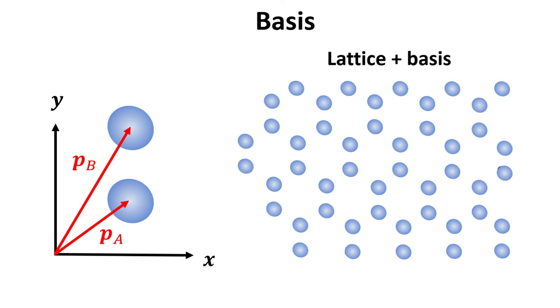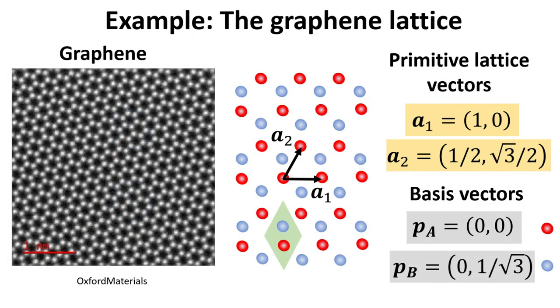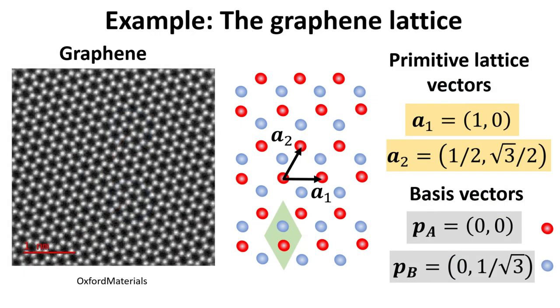The example given here is that of an actual two-dimensional material that exists in nature. Graphene is a two-dimensional honeycomb lattice of carbon atoms. From the previous example, we saw that it can be described through a triangular or hexagonal two-dimensional Bravais lattice plus a basis of two atoms. The normalized primitive vectors making up the graphene Bravais lattice are highlighted in the yellow box. The basis is composed of two carbon atoms whose basis vectors are highlighted in the grey boxes.